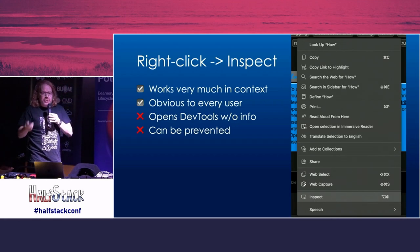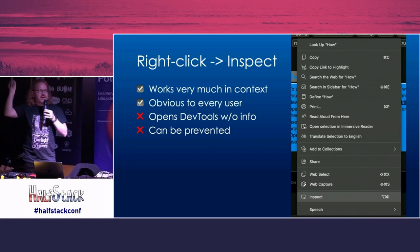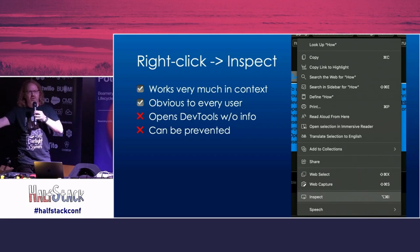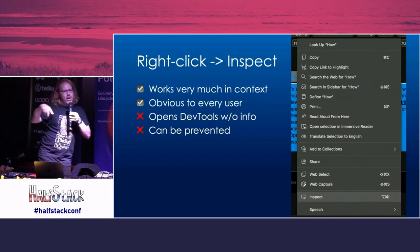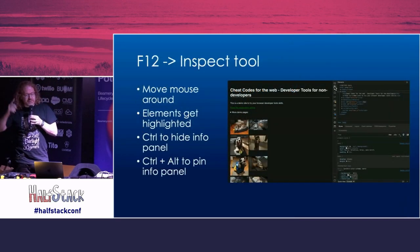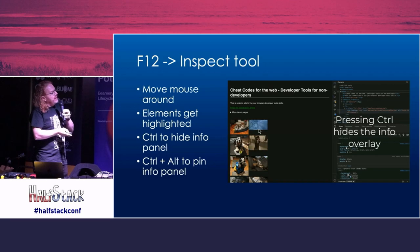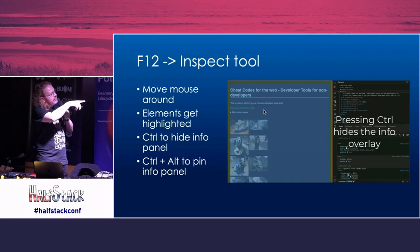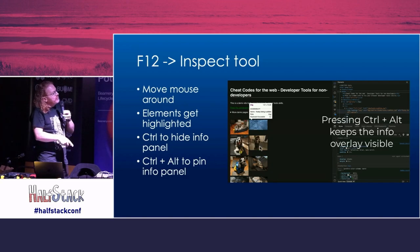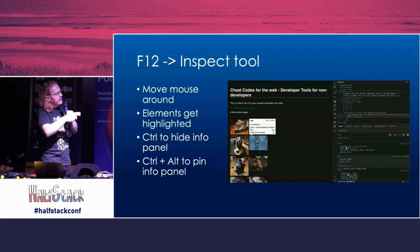Most people, when they start inspecting or opening developer tools, do a right-click and inspect on a certain element on the page. That's great because it's very much in context and easy for non-technical people — but it opens the developer tools without context, and all of a sudden the elements tool is there with the styles panel and a console, and people think something horrible is happening. The inspect tool, on the other hand, you cannot prevent. You highlight different parts of the page, and pressing Ctrl hides the info window, while pressing Ctrl+Alt fixes it in place.